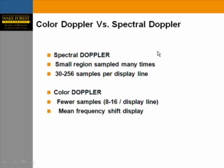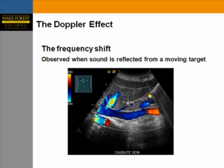Color Doppler versus spectral Doppler: spectral Doppler samples a small region many times, using about 30 to 256 samples per display line. Color Doppler uses fewer samples — 8 to 16 per display line — with a mean frequency shift display. The Doppler shift is the frequency shift phenomenon observed when sound is reflected from a moving target.